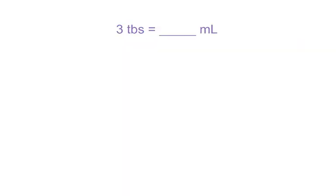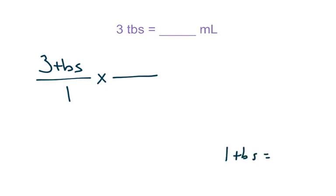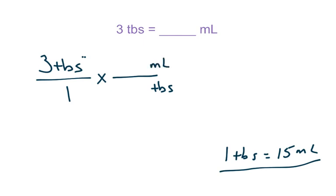So we have 3 tablespoons to milliliters. First, take what they give you and put it over a 1 to turn it into a fraction, then multiply by the conversion factor. The conversion factor you need to memorize is: 1 tablespoon equals 15 milliliters. So you use this in the fraction: 1 tablespoon and 15 milliliters. Since tablespoons is on top, you need tablespoons on the bottom so they can cancel, and you're going to milliliters.